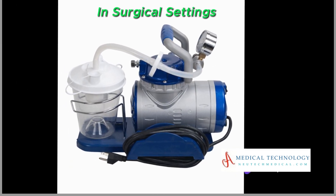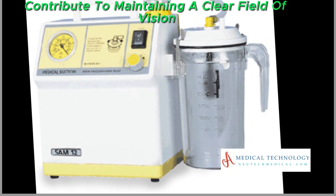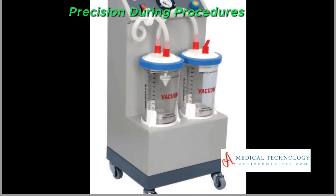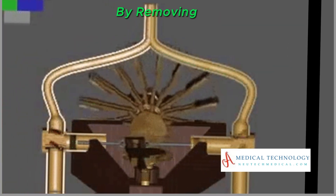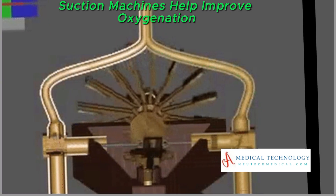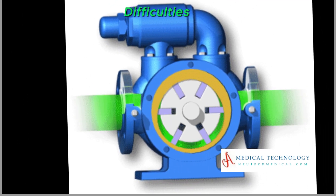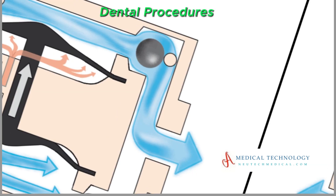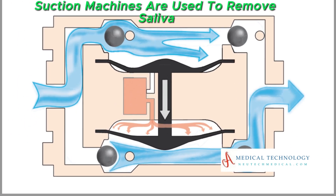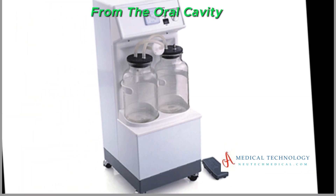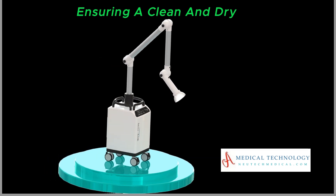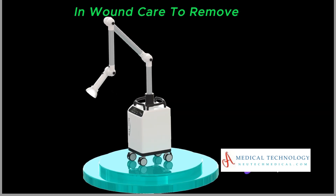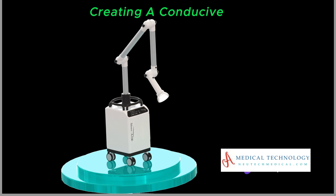Surgical precision: in surgical settings, suction machines contribute to maintaining a clear field of vision for surgeons by removing blood and fluids from the surgical site, enhancing precision during procedures. Improved oxygenation: by removing impediments to airflow, suction machines help improve oxygenation in individuals with respiratory difficulties, particularly for patients who struggle with effective coughing or clearing of secretions. In dentistry, suction machines are used to remove saliva, blood, and debris from the oral cavity during dental procedures, ensuring a clean and dry environment. Suction devices are also employed in wound care to remove excess fluids from wounds, creating a conducive environment for healing.